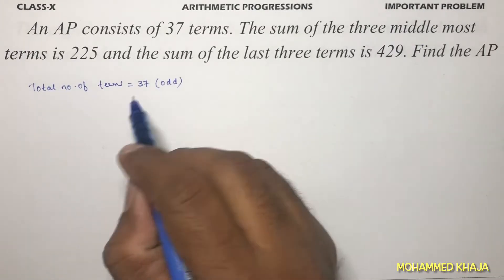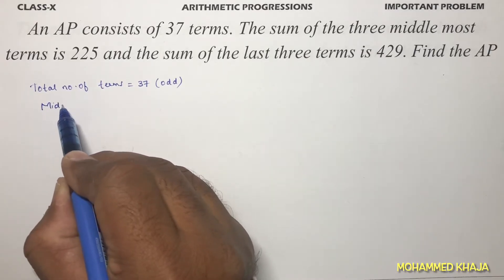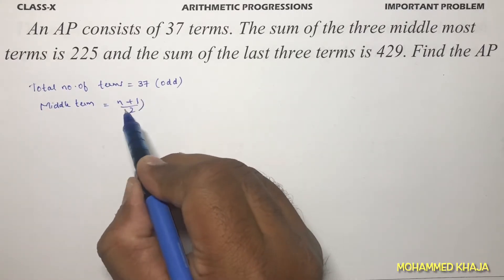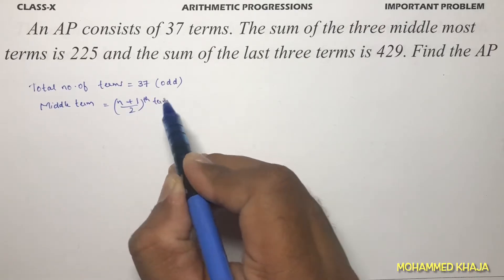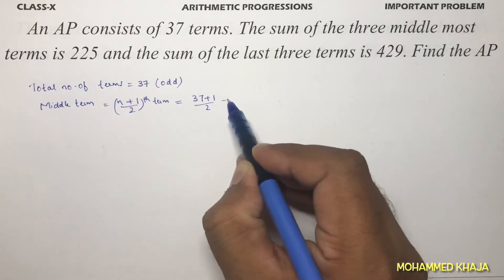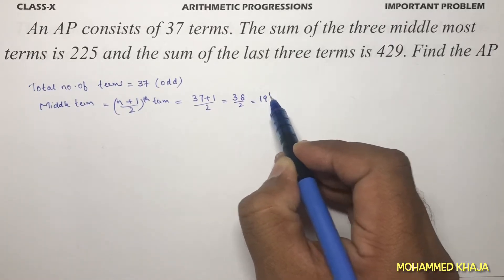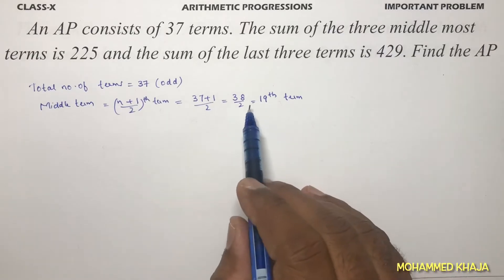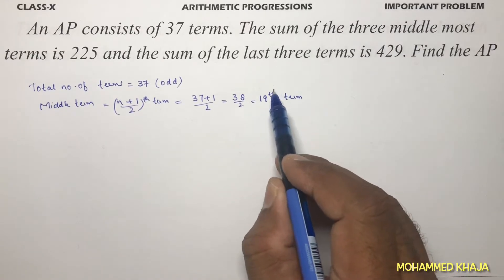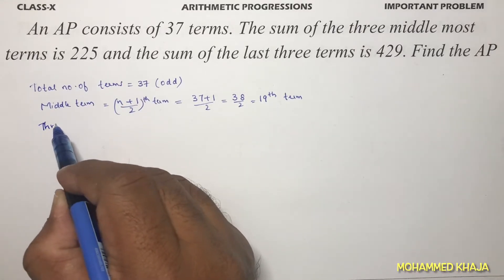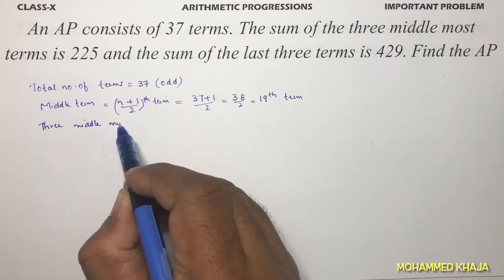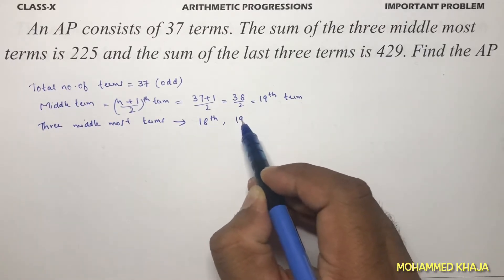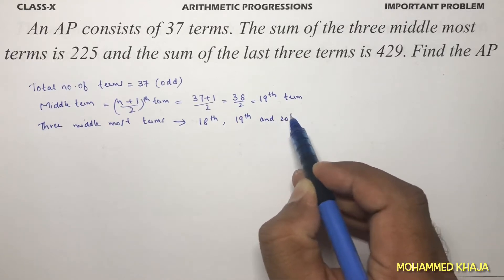Since 37 is an odd number, to find the middle term the formula is (n+1)/2. So here (37+1)/2 = 38/2 = 19th term is the middle term. But we need the sum of three middlemost terms, so the three middlemost terms will be the 18th, 19th, and 20th.